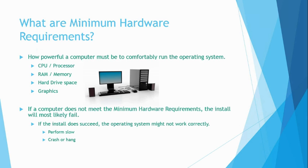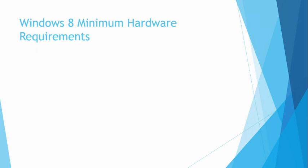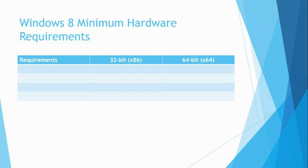Now that we know what minimum hardware requirements are, let's take a look more closely at what the minimum hardware requirements are for Windows 8. When referring to the Windows 8 minimum hardware requirements, you should be aware that there are two architectures for Windows 8: the 32-bit architecture and the 64-bit architecture. Don't worry if you are unsure what these are right now — we will be covering them in a later lesson.